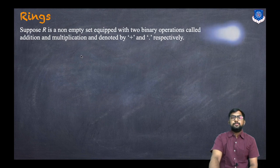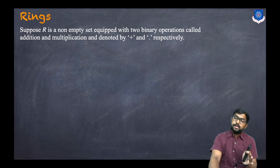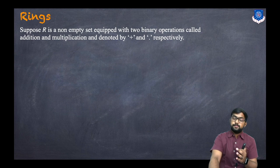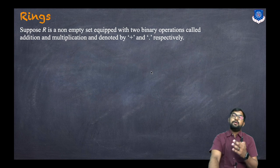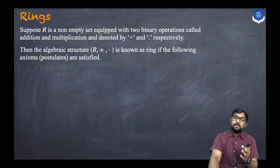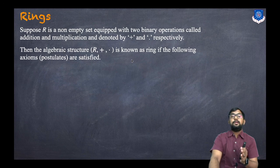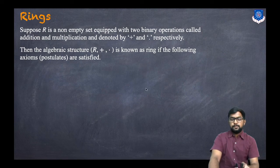So suppose R is a non-empty set equipped with two binary operations called addition and multiplication, denoted by the plus symbol and dot symbol respectively. Then the algebraic structure (R, +, ·) is known as a ring if the following axioms or postulates are satisfied.